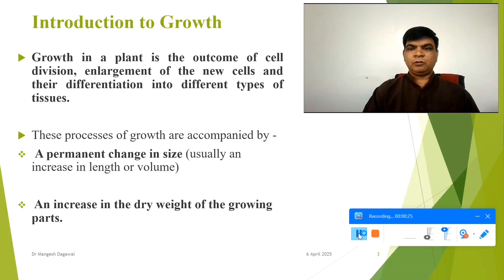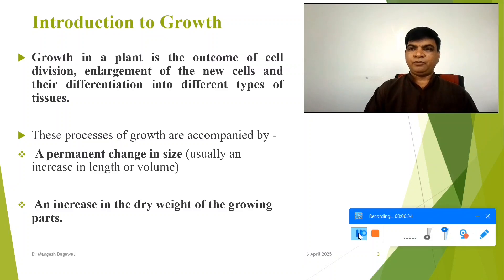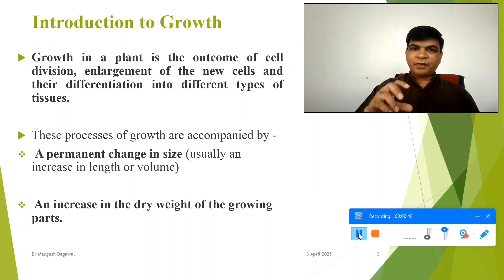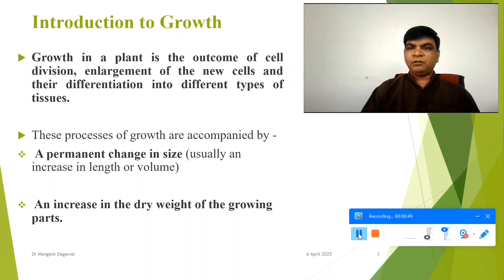What exactly is meant by growth? Growth in a plant is the outcome of cell division, enlargement of new cells, and their differentiation into different types of tissues. This is called plant growth.